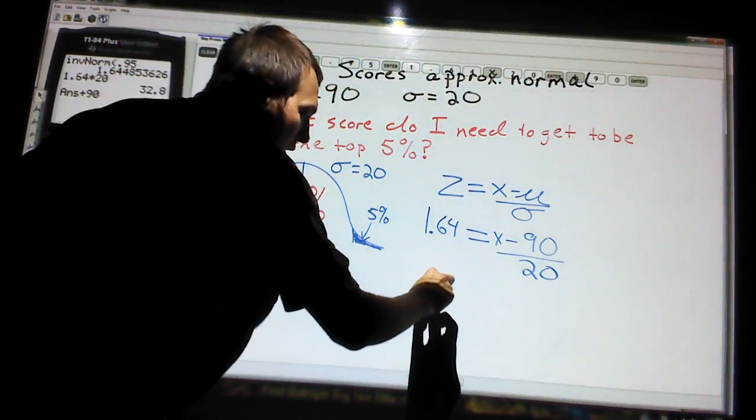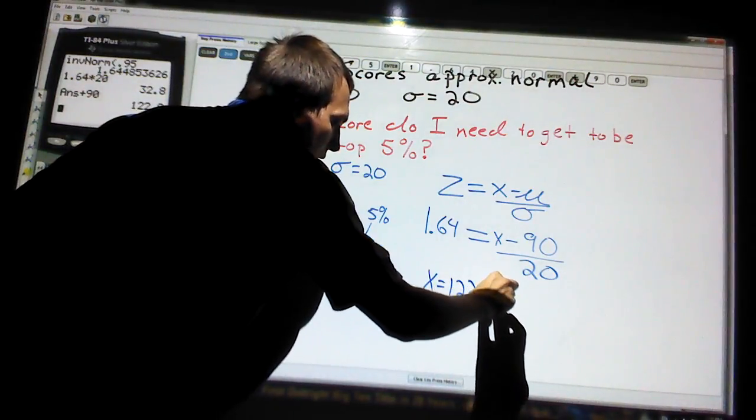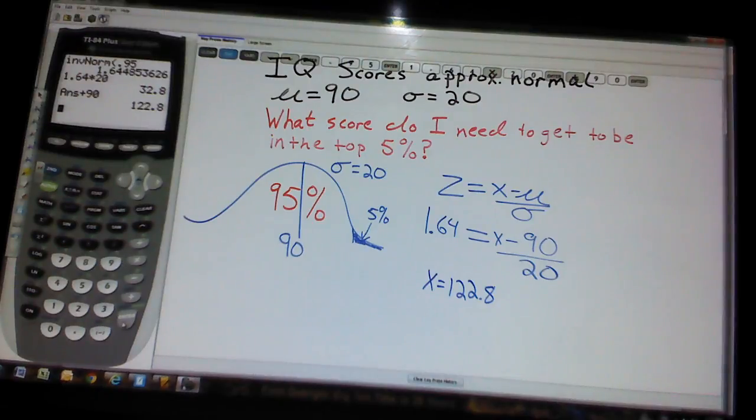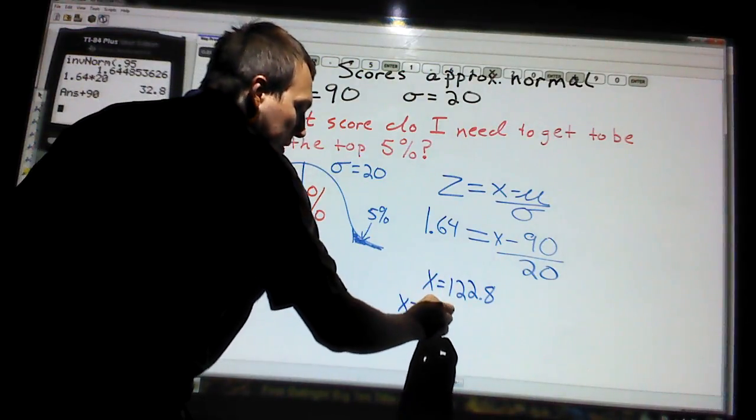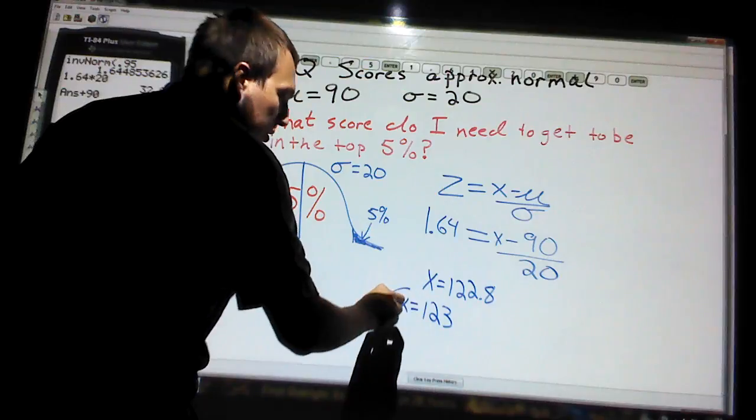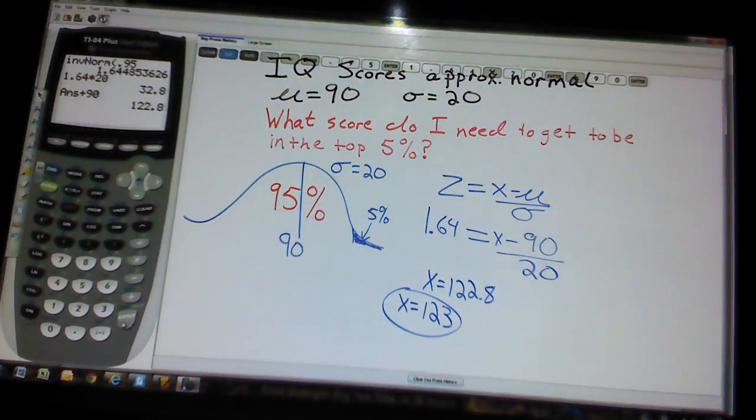I need a score of 122.8. If you put that on my test for chapter two, glorious, super happy. But later on in the year, you're going to need to know when to round. In this case, I don't think on an IQ test I can get a .8. So if I want to be in that top five percent, I would need to round, so my rounded answer would be 123. We're going to see that more in statistics, when to round, when not to round. In this case, I would say I should round 123. So if I want to be considered like a genius, I would need to score 123.